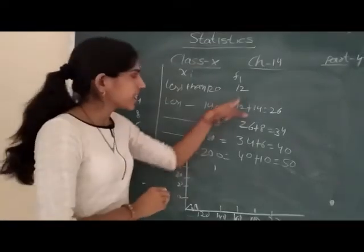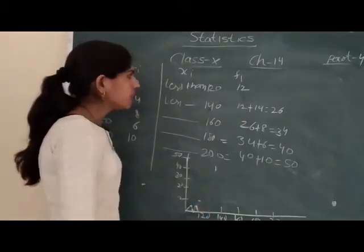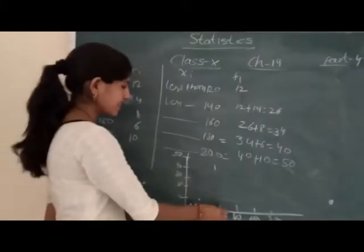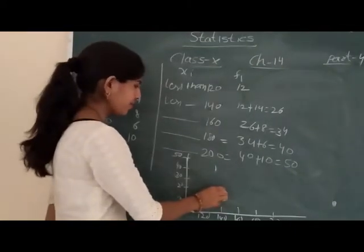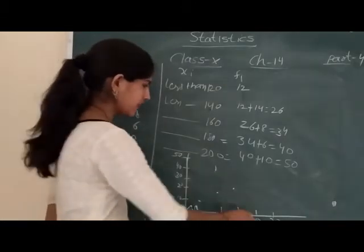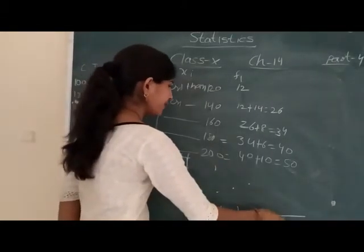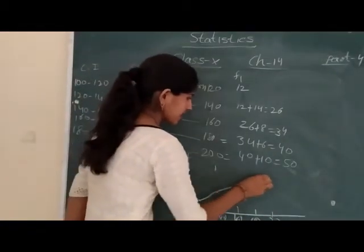At 120, how much is it? 12. 120 and 12. Then at 140 it's 26, 26. Then 34, 34. Then 40, a bit above. And 50, a bit above. This will be our frequency curve.